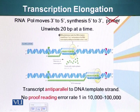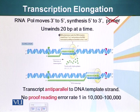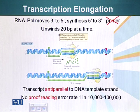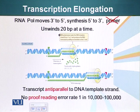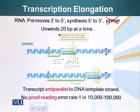Once the RNA polymerase has landed on the promoter, it starts putting in nucleotides — these are RNA nucleotides, not DNA nucleotides. RNA polymerase cannot use DNA nucleotides. RNA polymerase moves in the 3 prime to 5 prime direction along the template strand. All polynucleotide synthesis, whether DNA or RNA, can only be extended in the 5 prime to 3 prime direction.